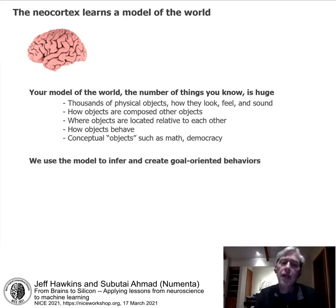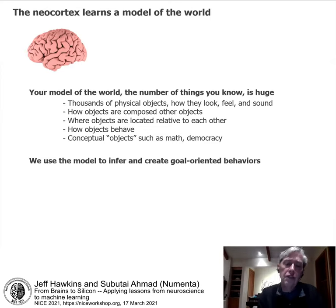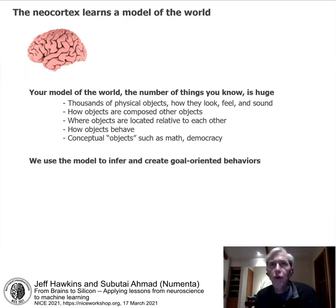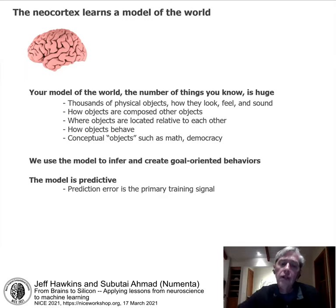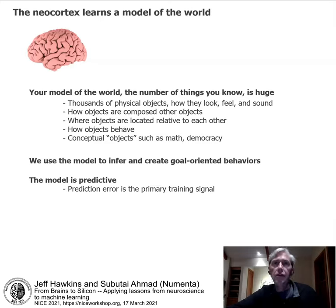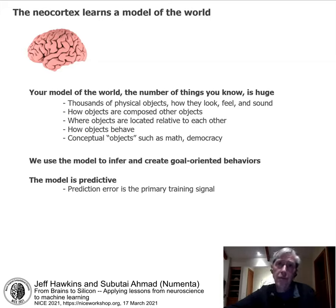We use this model to infer our current situation and generate goal-oriented behavior — you've literally recreated the world in your head. The model is a predictive model, constantly making predictions. Prediction error — when your brain expects one thing and something else happens — is the primary training signal. It tells the neocortex something is wrong about its model, draws your attention to that thing, and you update the model accordingly.